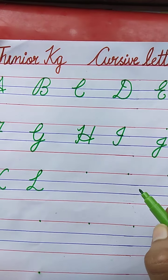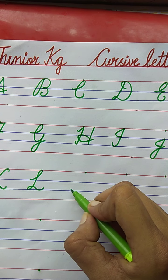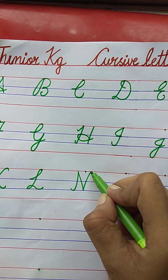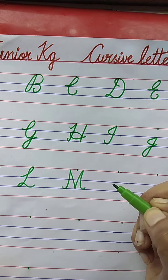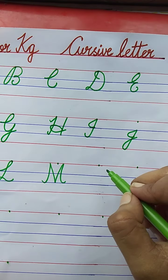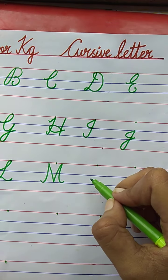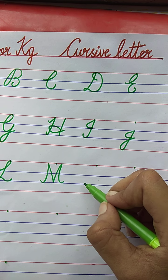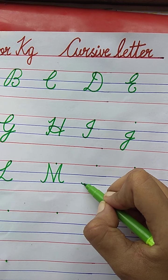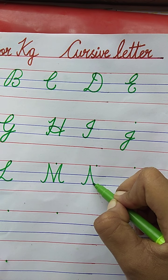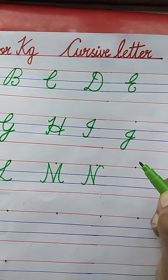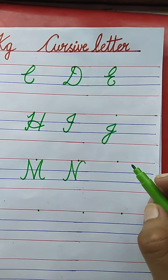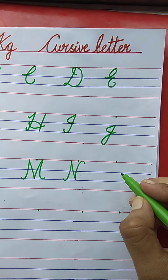Now the next letter. M. M for Monkey. The spelling of Monkey: M-O-N-K-E-Y. Now what letter comes after M for Monkey, children? N. N for Nest. The spelling of Nest: N-E-S-T.